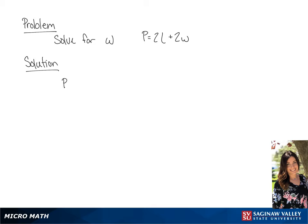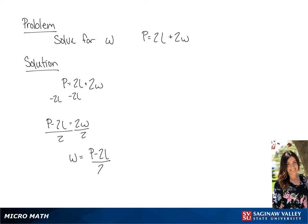We have P equals 2L plus 2W, and we are going to solve this for W. The first thing we're going to do is subtract 2L from each side, giving us P minus 2L equals 2W. Now to isolate W, we're going to divide both sides by 2, giving us W equals P minus 2L, all over 2.